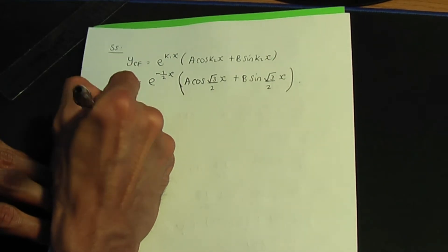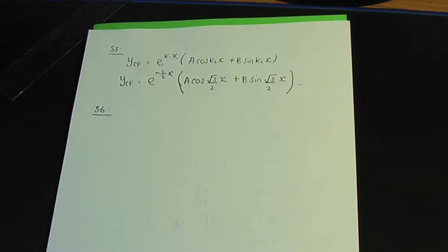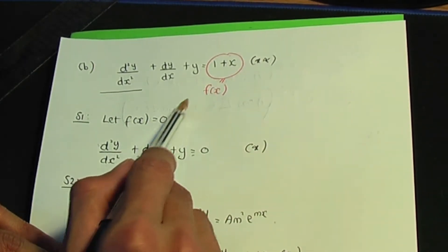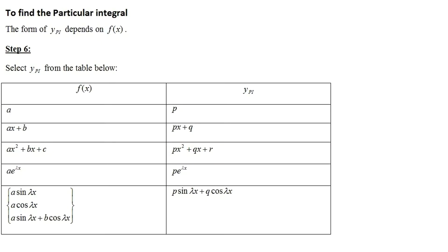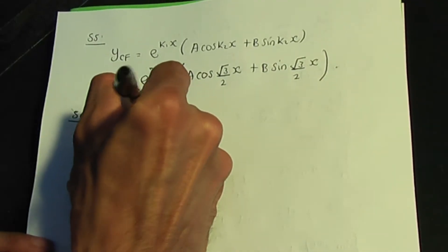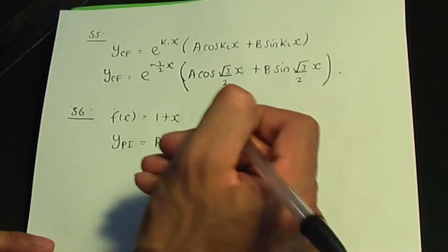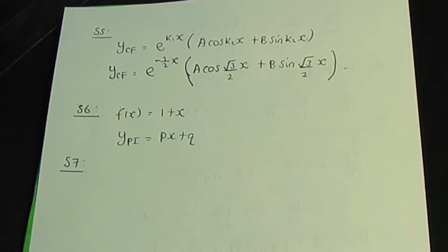Step six: consider yPI, which depends on f(x). Our f(x) is 1 + x, which is linear. If f(x) is linear of the form ax + b, we take yPI = px + q, and our job is to work out p and q.